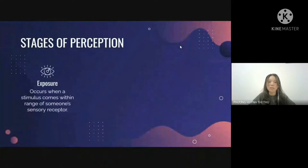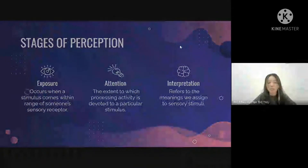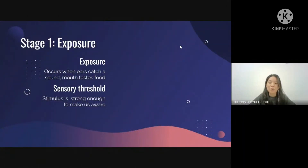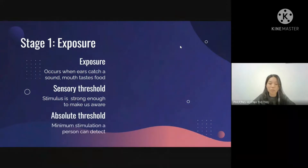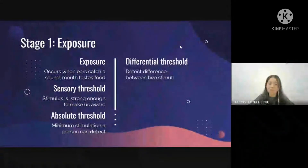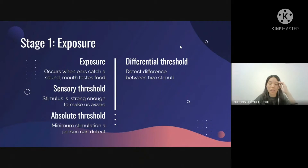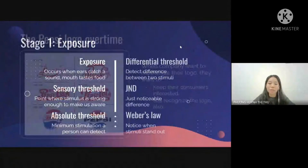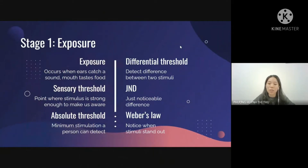My name is Tufu and I will talk about the stages of perception. This process has three stages: exposure, attention, and interpretation. Stage one is exposure, which occurs when your ears catch a sound or your mouth tastes food. Key concepts include sensory threshold — the point where a stimulus is strong enough to make us aware — and absolute threshold, the minimum amount of stimulation a person can detect. For example, a bat's sound is beyond our absolute threshold. Differential threshold is the sensory system's ability to detect changes between two stimuli; the minimum detectable difference is called the JND. When a company modernizes its logo, it wants to keep it new enough to interest consumers but not so different that consumers can't recognize it.